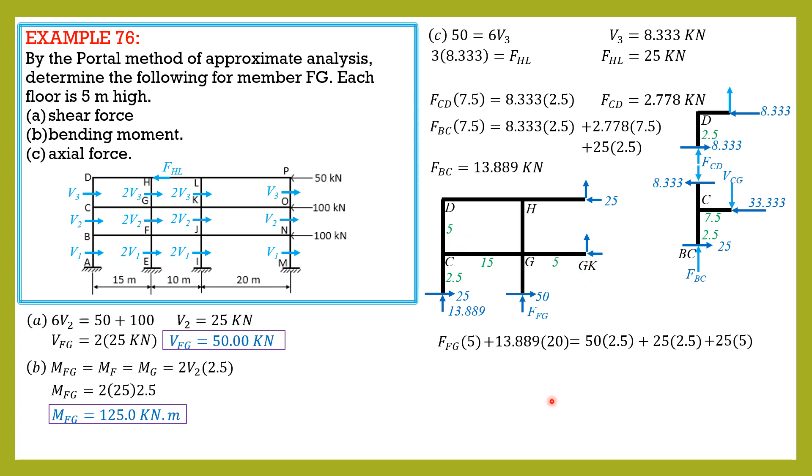So from there we can solve FFG, which is in compression. It is equal to 6.944 kilonewtons compression. So that's it, and we will solve this by cantilever method also in Example 77.